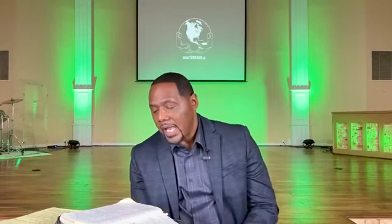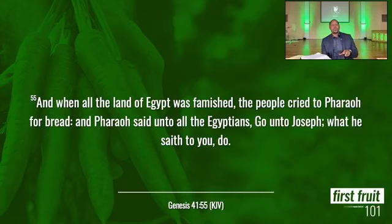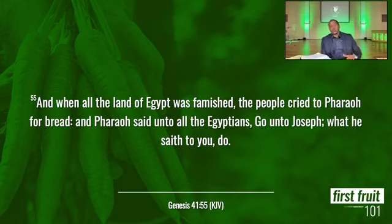Verse 55 says when all the land of Egypt was famished, the people cried to Pharaoh for bread. Joseph had gone in every city teaching them his plan. People executed the plan to a certain degree. But when they ran out, who did they call? Pharaoh. This is what I love right here — Pharaoh said unto the Egyptians, when they ran to Pharaoh about their problem, look what Pharaoh's answer was: go unto Joseph.